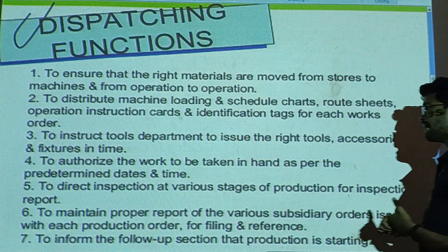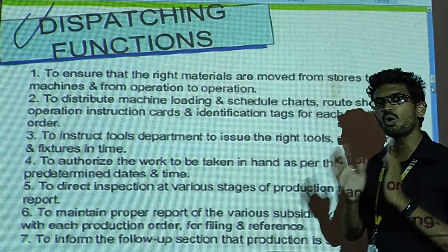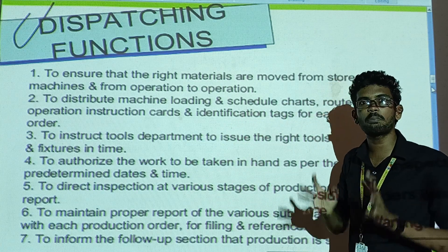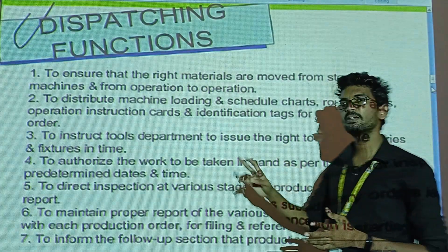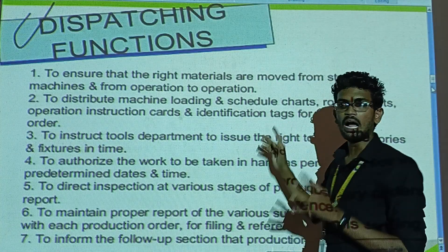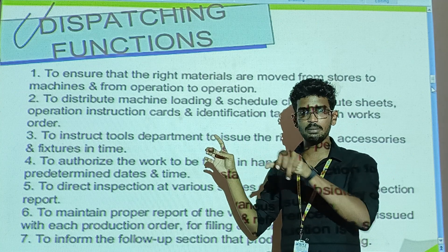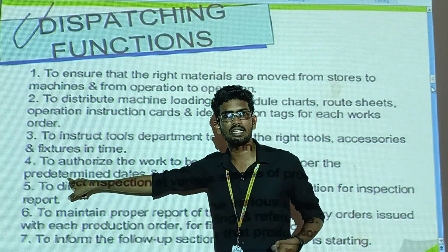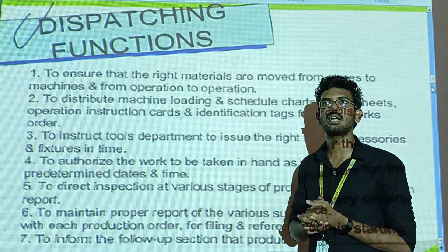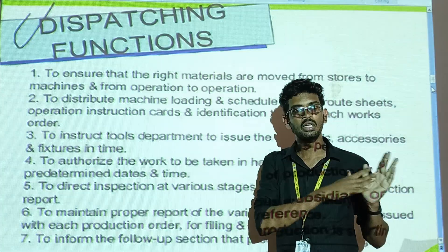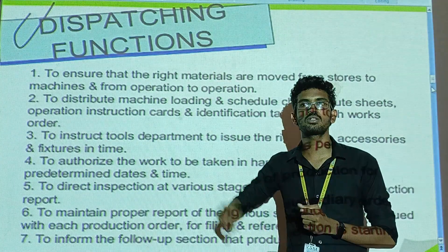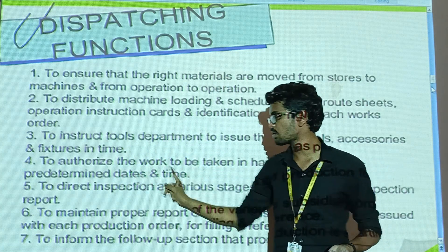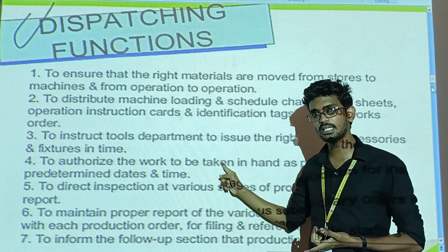The fourth function is to authorize the work to be taken in hand as per the pre-determined dates and times. You have to schedule the work with the time and routing. Pre-determined means the time has been determined in advance — for example, if you have 3 hours, the work must be done within that time.